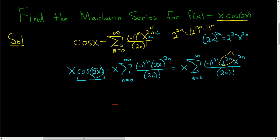Let's finish. We can distribute the x, which is x^1. When you multiply x^1 times x^(2n), you get x^(2n+1). So this is the sum, as n runs from 0 to infinity, of (-1)^n · 4^n · x^(2n+1), all divided by (2n)!.